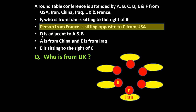The next statement is: D is adjacent to A and B. Position of B is known to us. D is adjacent to A and B, so D will occupy this position and A will occupy this position. So this statement is taken care of.